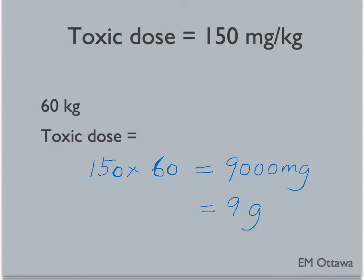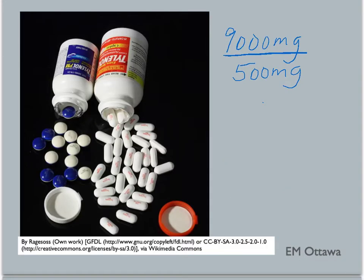Each pill of extra-strength acetaminophen is 500 milligrams. Therefore, 9 grams of acetaminophen translates to 18 tablets — that is, 9,000 milligrams divided by 500 milligrams per pill — which is about a handful of pills.